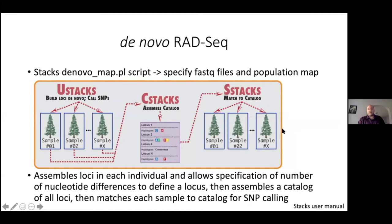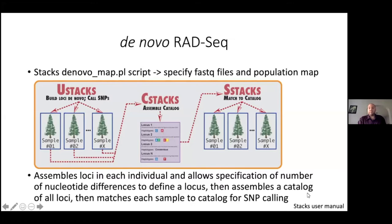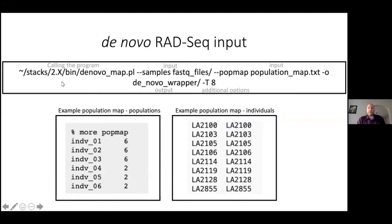Here's the basic outline workflow for Stacks. Within the Stacks program there is a Perl script — the denovo_map.pl wrapper — that will run through this entire pipeline for you. All you need to do is specify where your FASTQ files are and what the population map is. The different parts are U-Stacks, C-Stacks, and S-Stacks. U-Stacks assembles loci in each individual and allows you to specify the number of nucleotide differences to define what a locus is. Then it assembles a catalog of all these loci and matches each of your samples to it for SNP calling. Please check out the Stacks manual, which is very detailed.